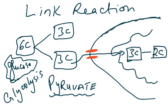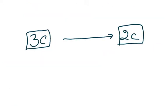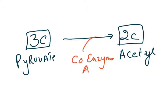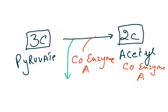The three-carbon pyruvate is converted to two-carbon acetyl-CoA. A carbon dioxide exits, and a coenzyme A is added to the acetate group, making it acetyl coenzyme A. During this process, when three carbon becomes two carbon, one carbon is lost as carbon dioxide.